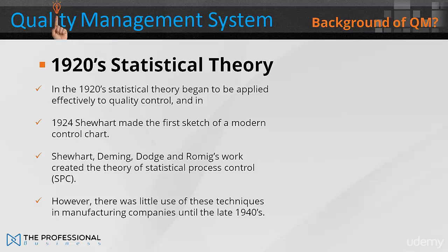His work was later developed by Deming, and the early work of Shewhart, Deming, Dodge, and Romig constitutes much of what today comprises the theory of statistical process control. However, there was little use of these techniques in manufacturing companies until the late 1940s.